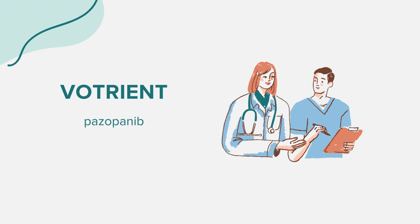Like all medications, Votrient can cause side effects. Some of these include nausea, vomiting, diarrhea, stomach pain, loss of appetite, weight loss, breathing difficulties, tumor pain, bone pain, muscle pain, headaches, fatigue, changes in hair or skin color, and changes in taste. More severe side effects can include high blood pressure, infections, liver problems, and signs of tumor cell breakdown. Always consult your doctor about any side effects and report any new or unusual symptoms.